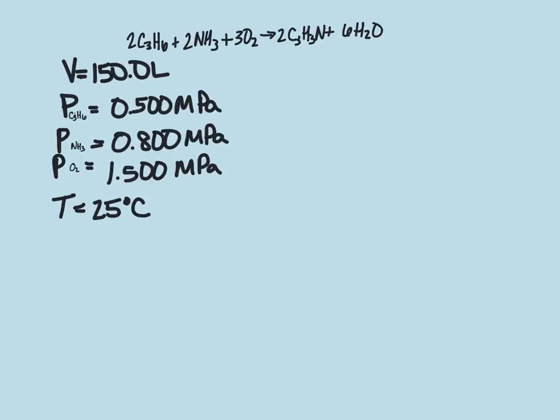For this problem, we have a production reaction with the chemical equation 2C3H6 plus 2NH3 plus 3O2 yields 2C3H3N plus 6H2O.